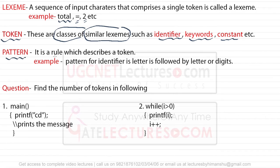There's something called a pattern - it is a rule which describes a token. For example, the pattern for identifiers: a letter is followed by letter or digit.